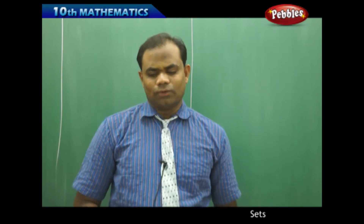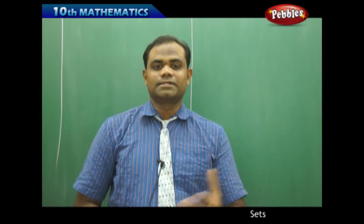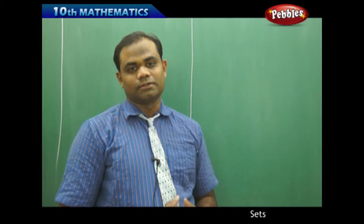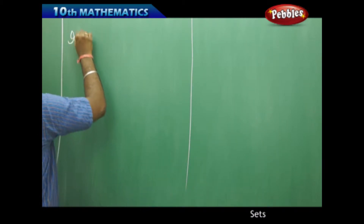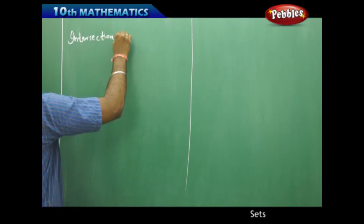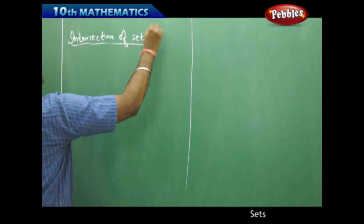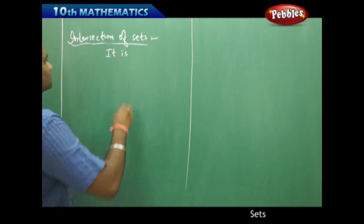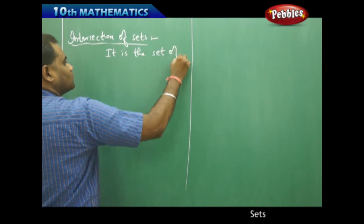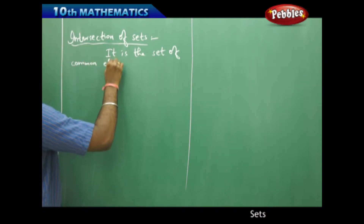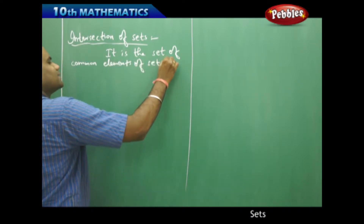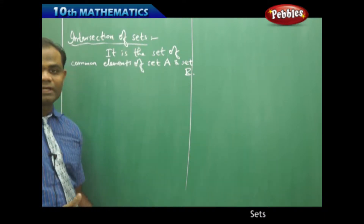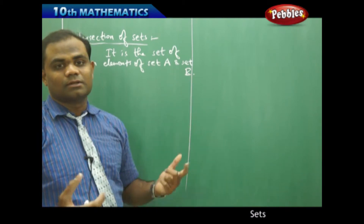The second basic operation of sets is intersection. Intersection is nothing but the common elements which we consider from both sets A and B. The most simple definition is: it is the set of common elements of set A and set B. If we consider two sets A and B, then the common elements of A and B is nothing but the intersection.